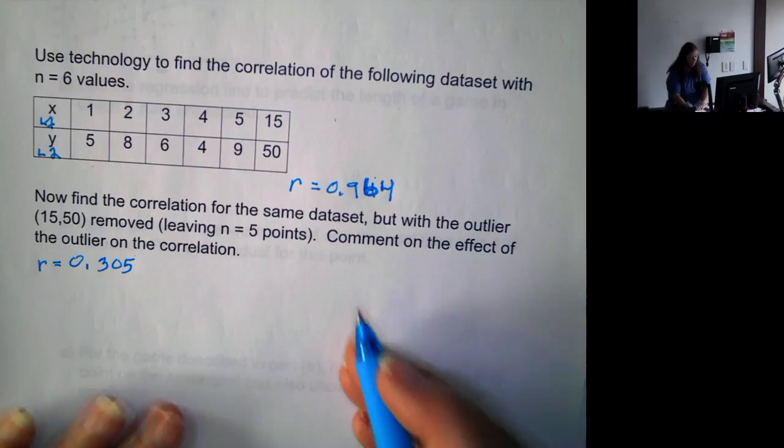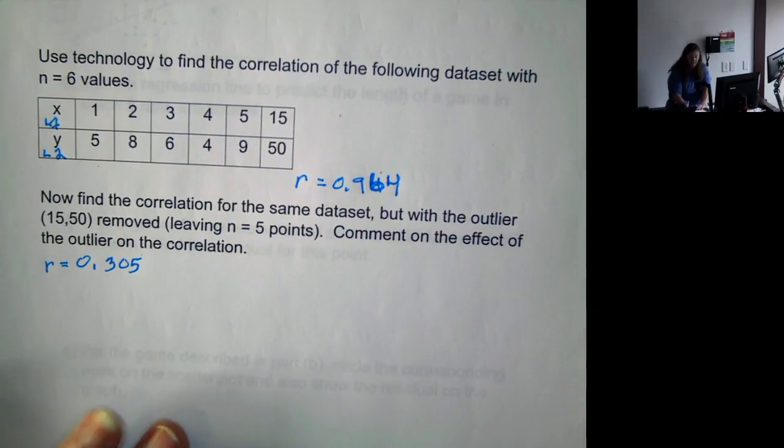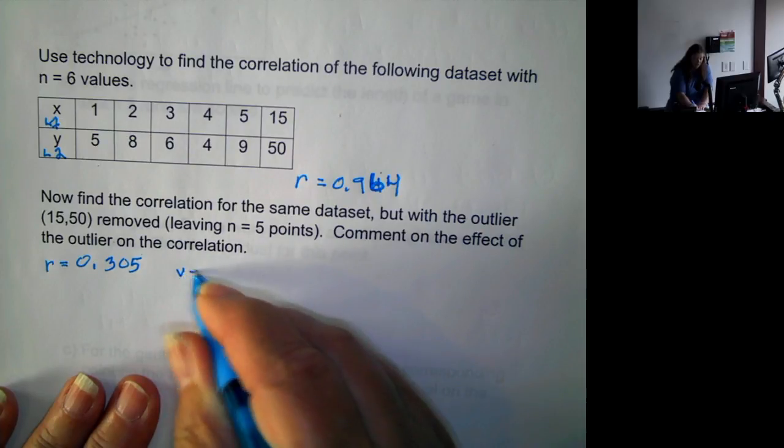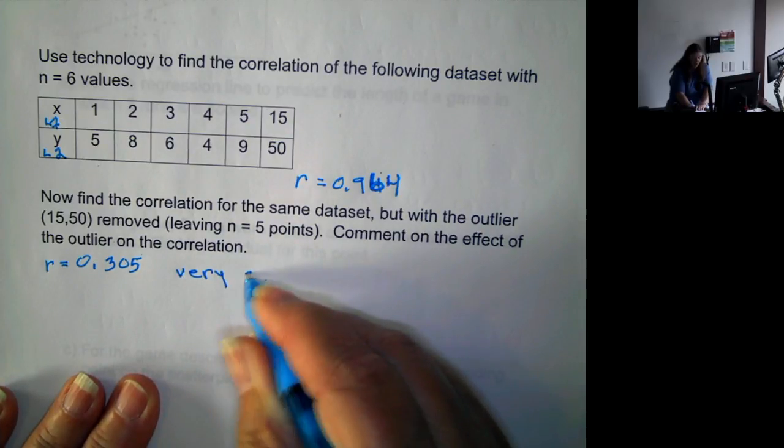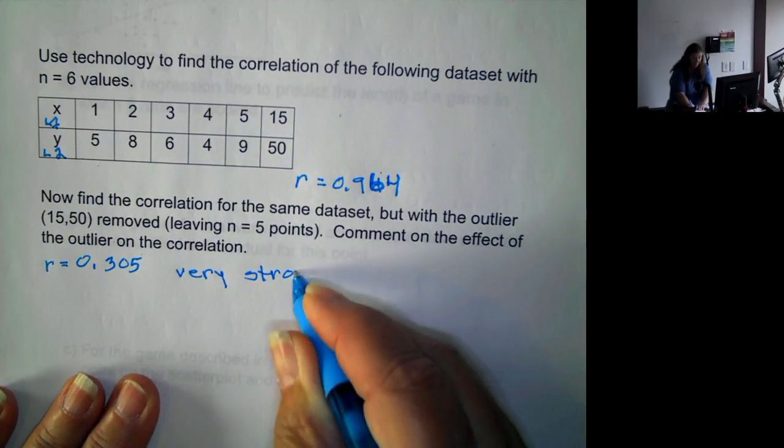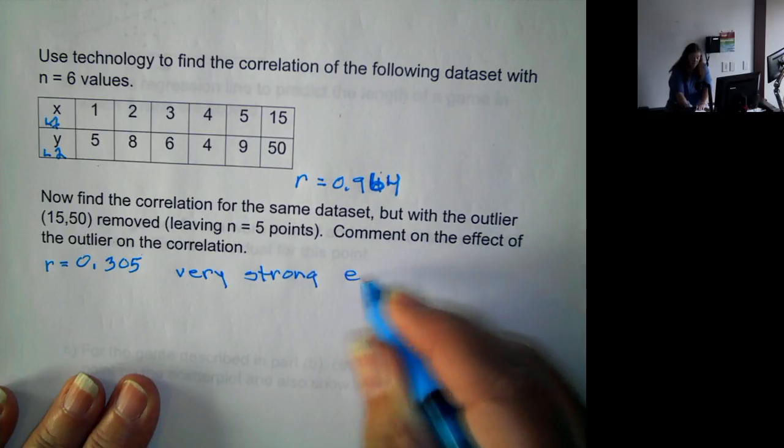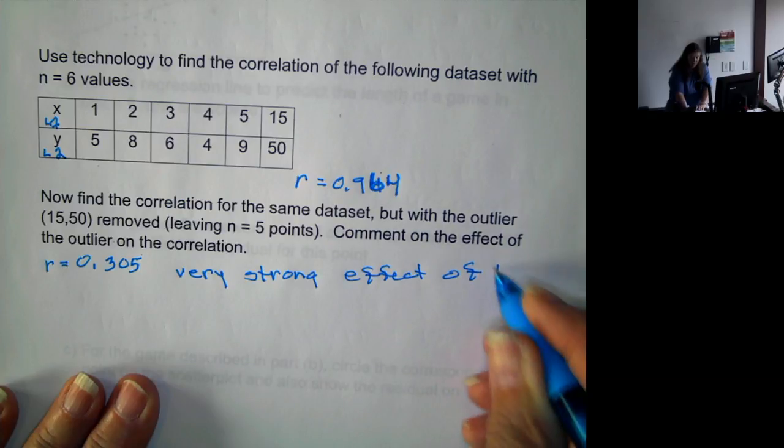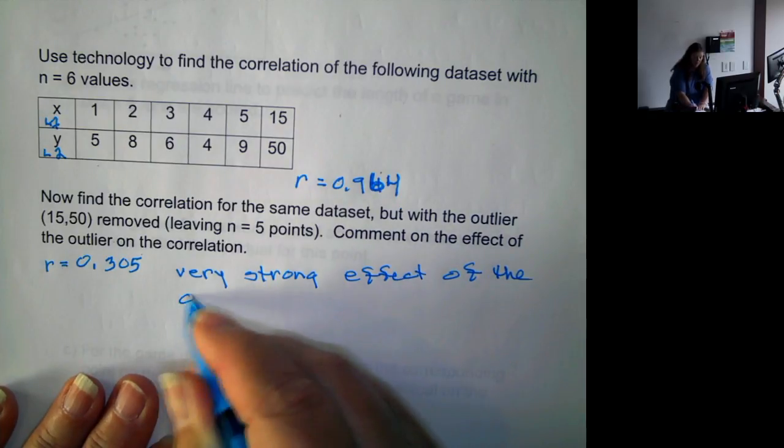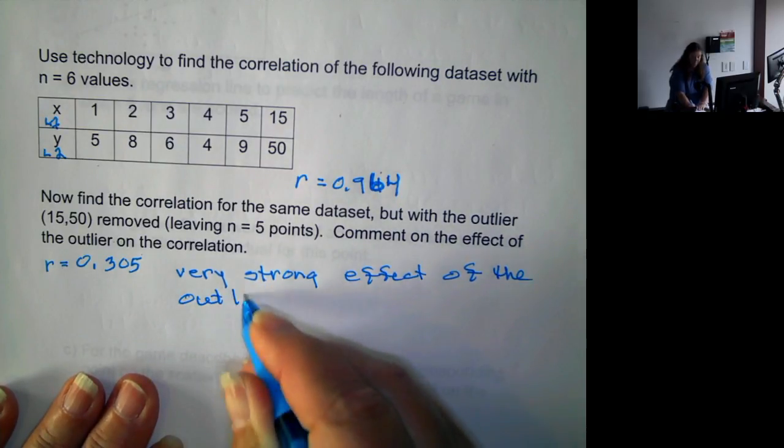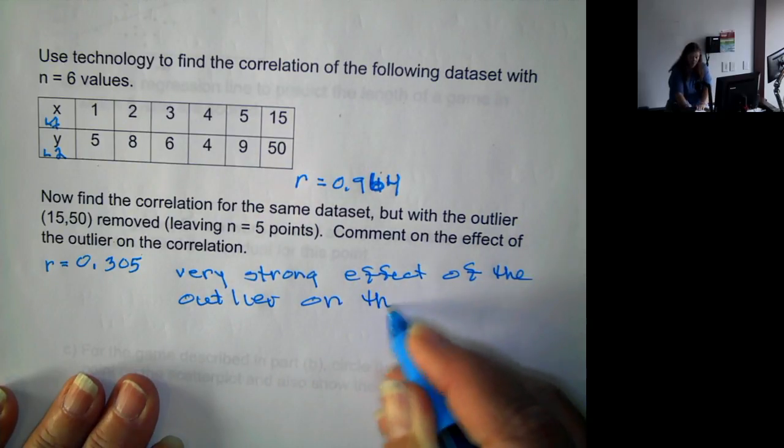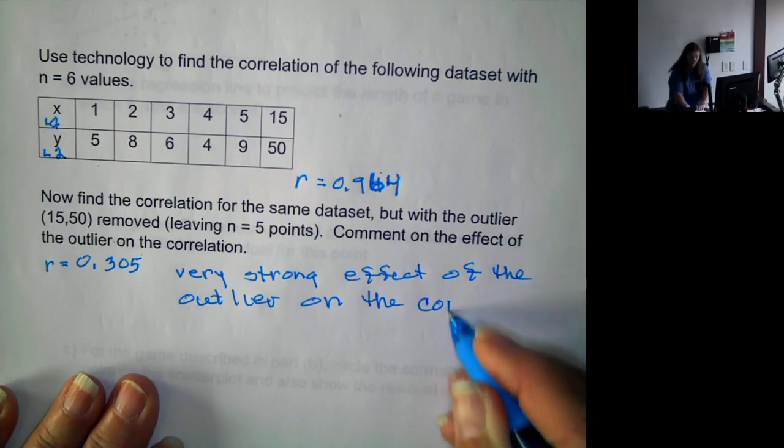Now, if we look at this, it's just a comment on the effect of the outlier on the correlation. So there is a very strong effect of the outlier on the correlation.